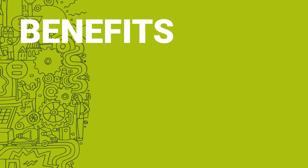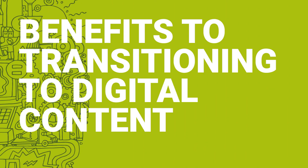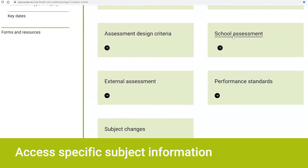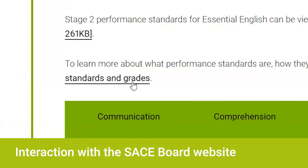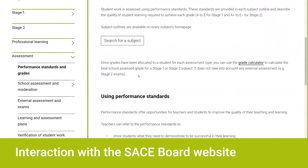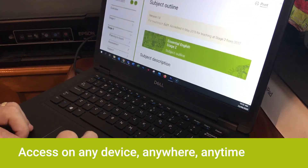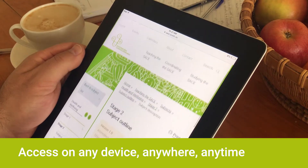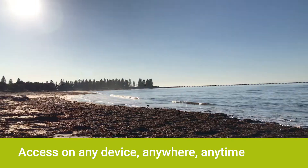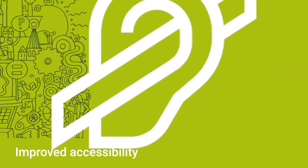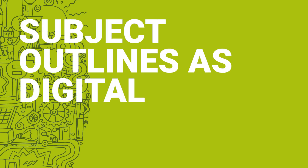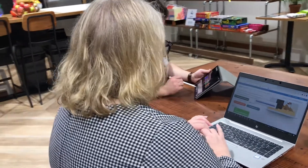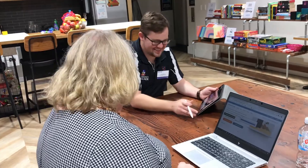There are significant benefits to transitioning subject outlines to digital content. It allows educators and students to access the specific information they require, and encourages them to interact with other relevant content on the SACE website. It provides access to content on any device so users can access the latest information anytime, anywhere. It improves accessibility for those who use assistive technologies, and having subject outlines as digital content enables the SACE Board to effectively maintain the information, ensuring users are viewing the correct information every time they access a subject outline.